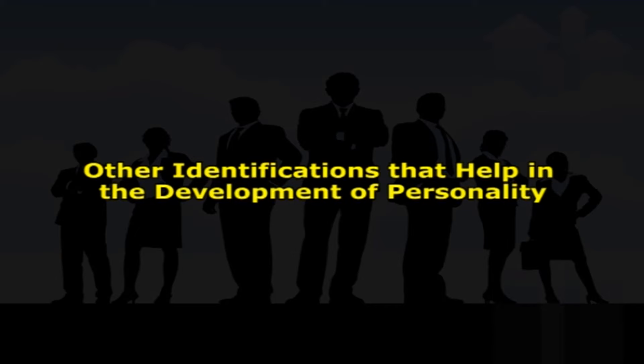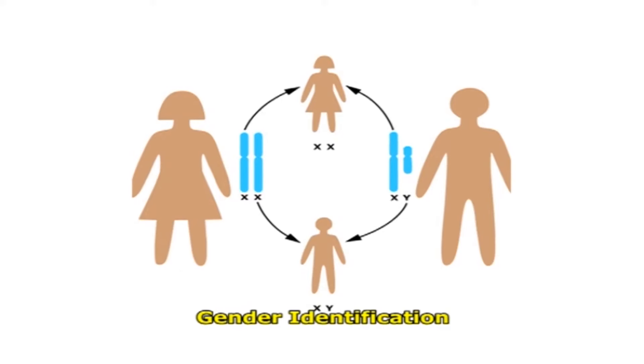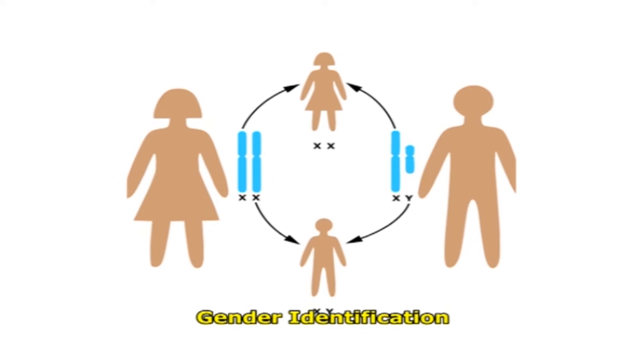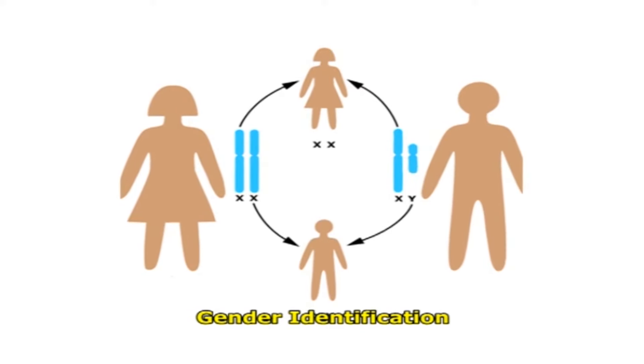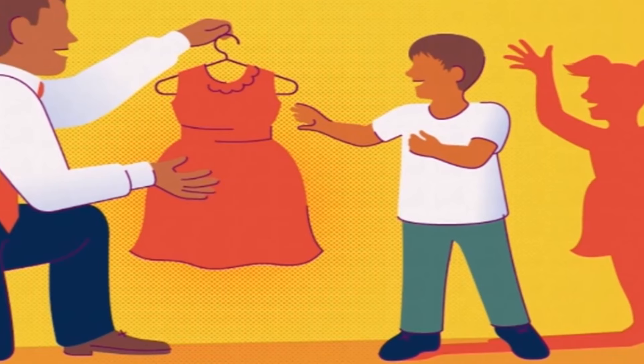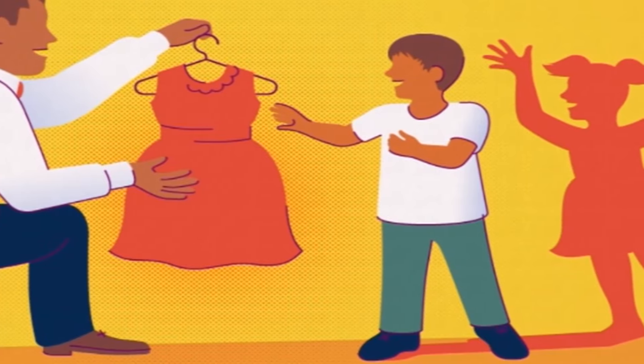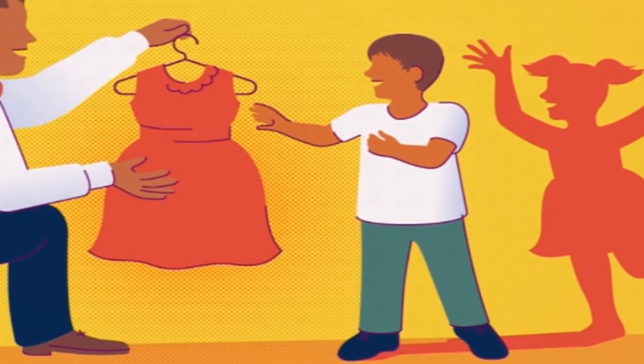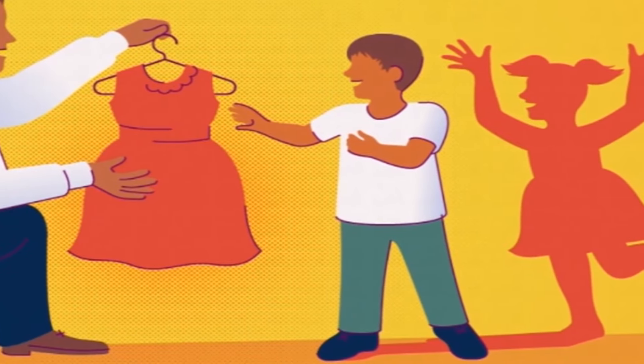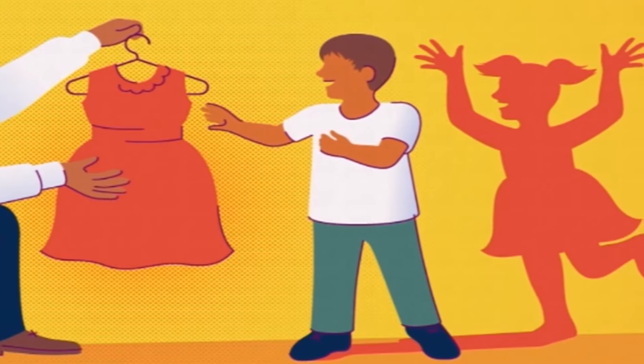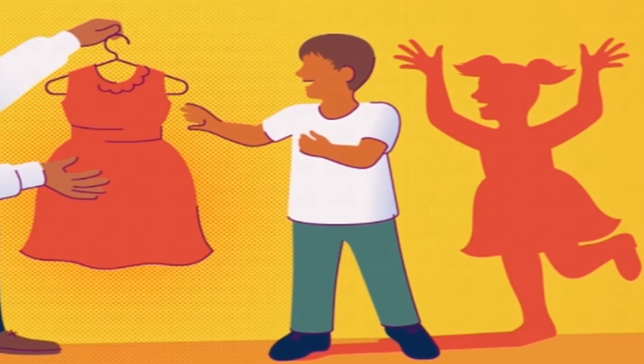Gender identification is an important part of identity in psychology. The child identifies whether he or she is a boy or a girl. Between 1 and 2 years of age, children become conscious of physical differences between boys and girls. Before their third birthday, they are easily able to label themselves as either a boy or a girl. By the age of 4, children's gender identity is stable and they know they will always be a boy or a girl. Children also learn gender role behavior — doing things that boys do or that girls do.